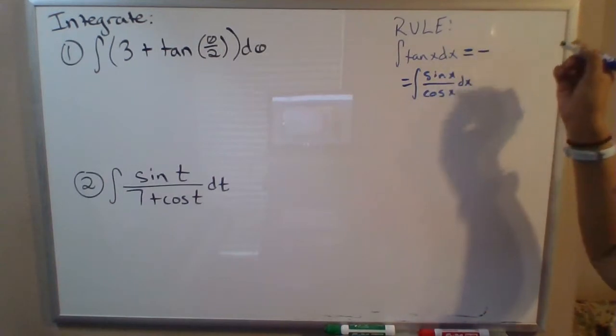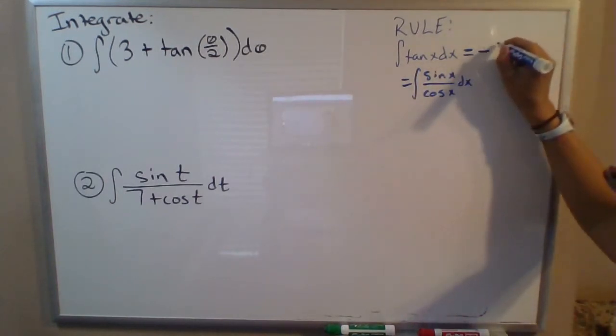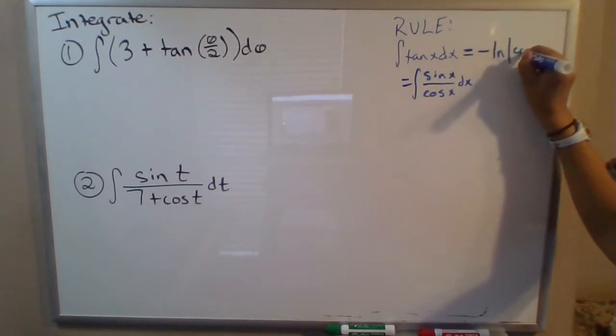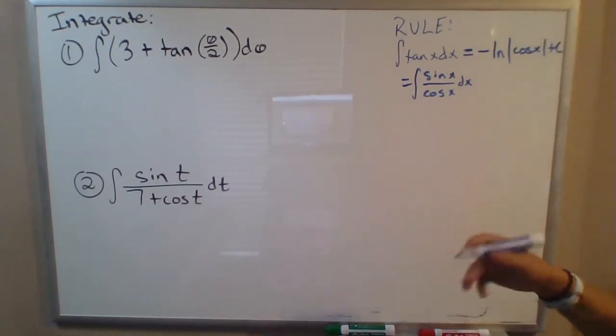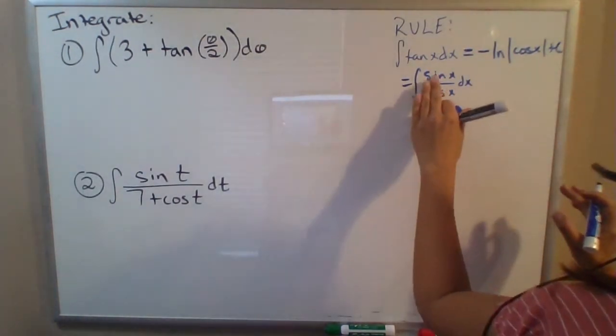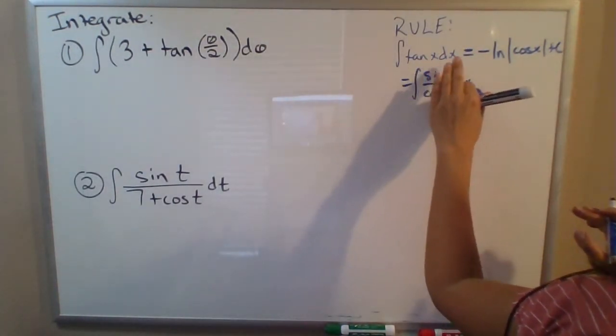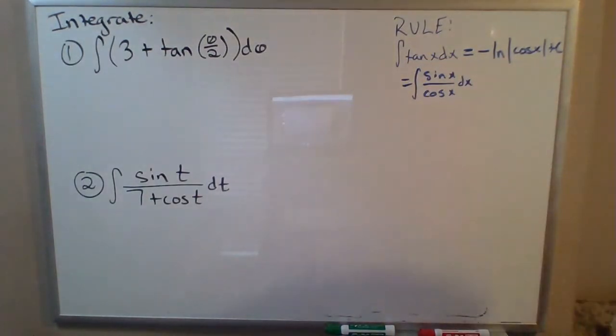So this sine x dx is actually equal to negative du. And so you end up with negative integral of 1 over u du, which is equal to natural log of the absolute value of u, which is cosine x. So I just talked through the derivation, but the important thing to remember is that the integral of tangent of x dx is equal to negative natural log of the absolute value of cosine x plus c.